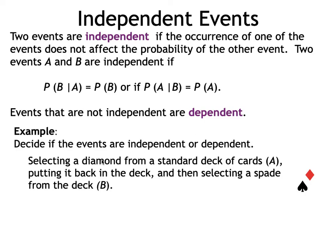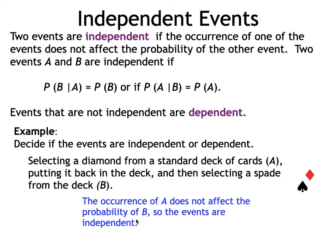Let's decide if events are independent: selecting a diamond from a deck of cards (event A) and putting it back, then selecting a spade (event B). Because it is with replacement, the total number of cards remains the same. The occurrence of A will not affect the probability of the second event, so the events are independent — the number of spade cards in the deck is not affected by choosing a diamond when the card is replaced.